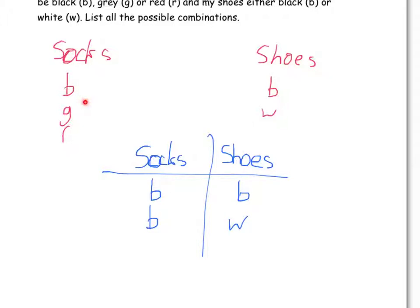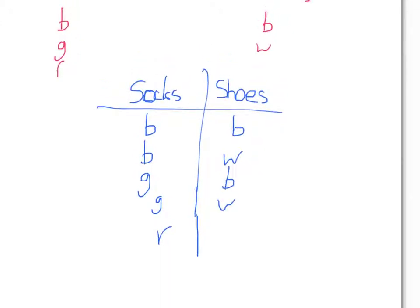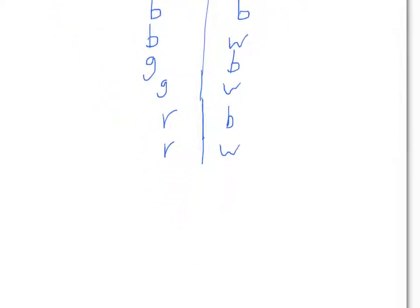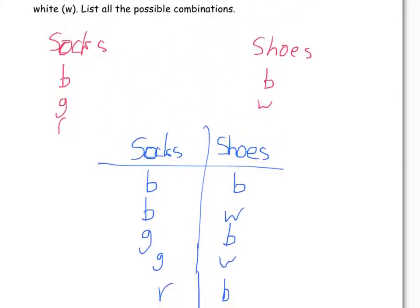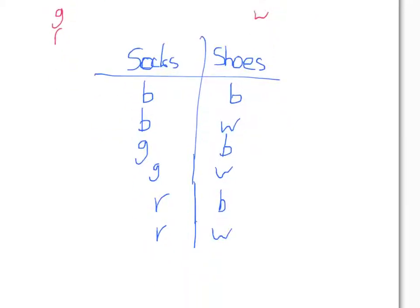Let's go down to my next color sock, which is grey. Grey, I can have black shoes or I can have grey with white shoes. Then I can have red with black shoes and I can have red with white shoes. You could be asked to solve a simple probability question from your list of outcomes, but that is all it is. When it says list all the possible combinations, it means how many different ways could you have your socks and shoes arranged.